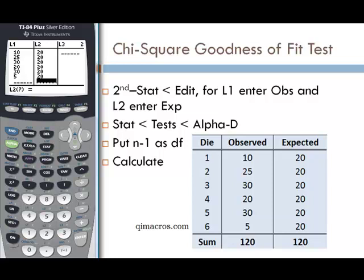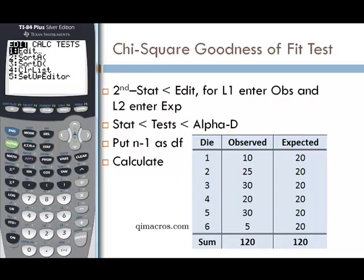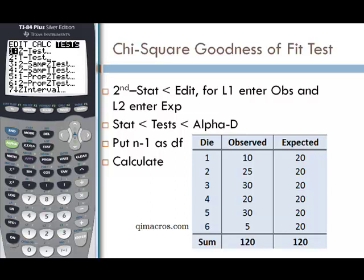Once we have our data entered into the calculator, we'll run the chi-square goodness of fit test. Press stat and scroll to the right to get to tests. Scroll all the way down to the chi-square goodness of fit test. It will be option D if we have the option.